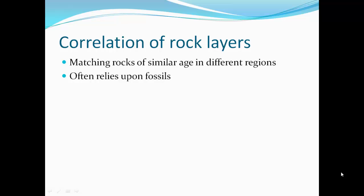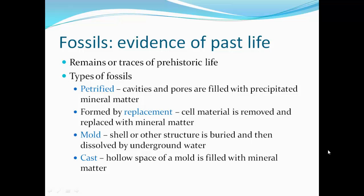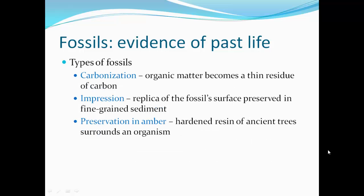Correlation of rock layers means matching rocks of similar age in different regions. We often rely on fossils to help us match up these rocks. Fossils are the remains or traces of prehistoric life. Different types of fossils: one is petrified, where cavities and pores are filled with precipitated mineral matter, or formed by replacement — cell materials removed and replaced with mineral matter. The mold: a shell or other structure is buried and dissolved by underground water, leaving a mold. A cast: the hollow space of a mold is filled with mineral matter. Carbonization: organic matter becomes a thin residue of carbon, making these fossils look dark. Impression: a replica of the fossil surface preserved in fine-grained sediment.